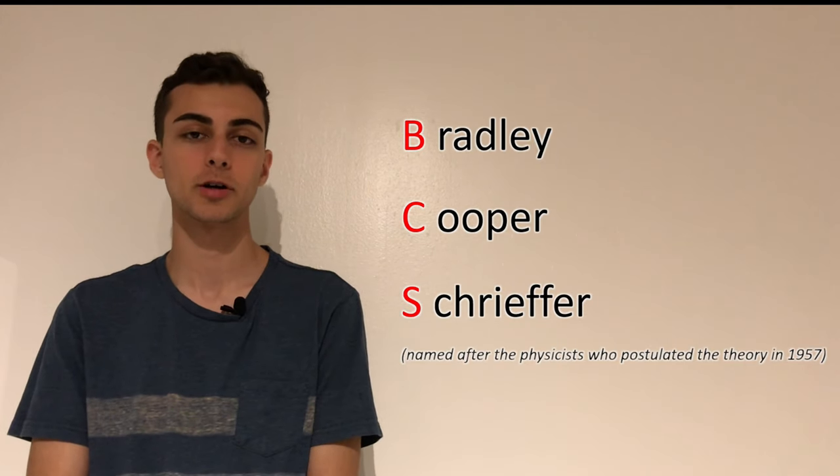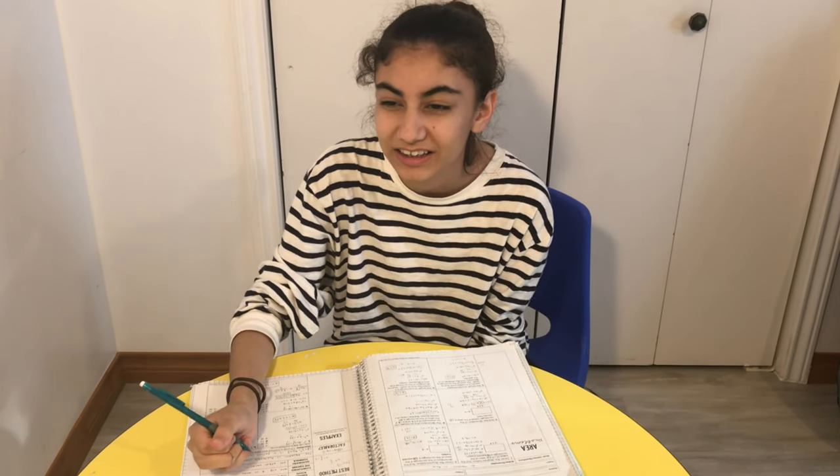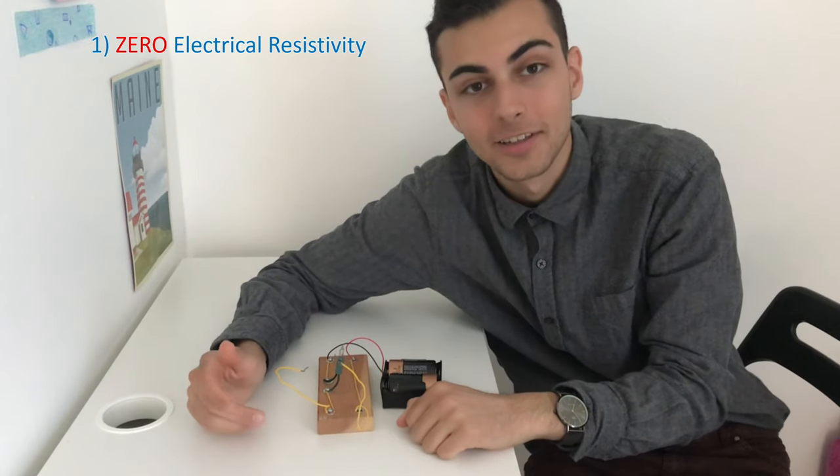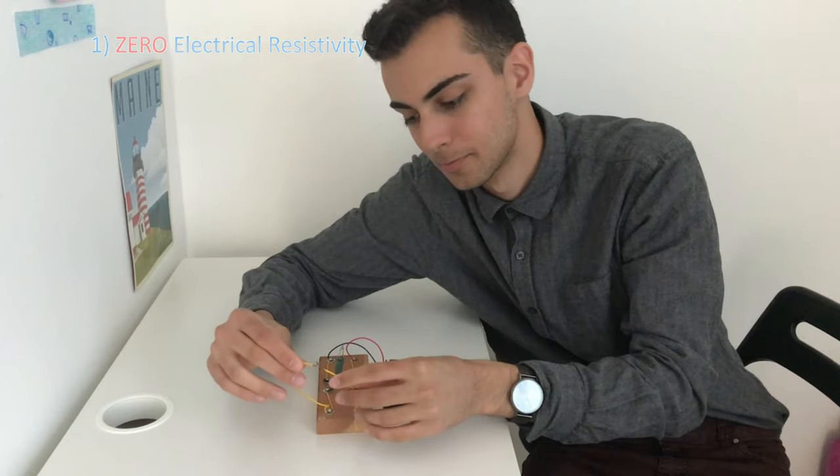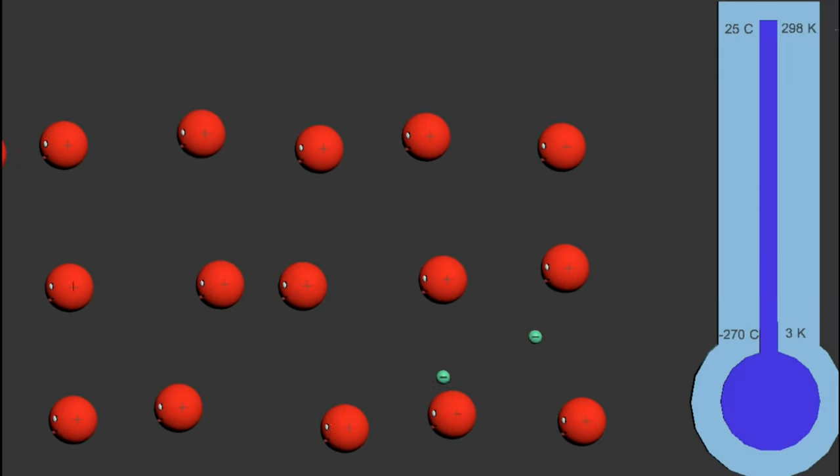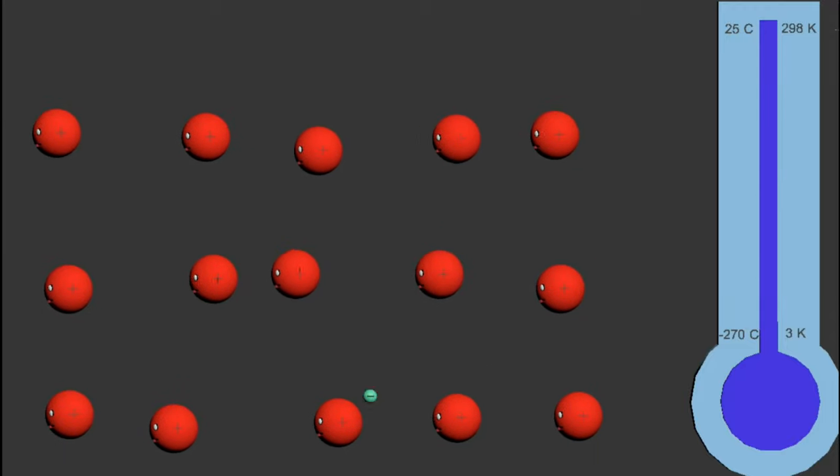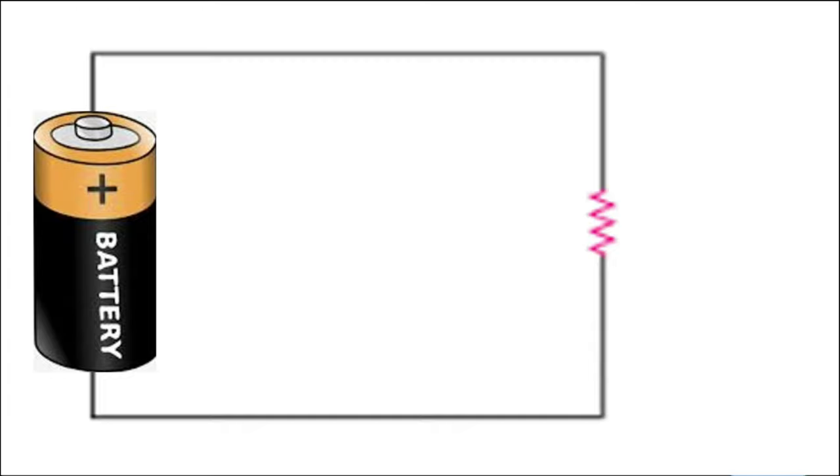Zero electrical resistivity. How is that physically possible? Well, let's first consider a normal conducting material such as this copper wire at room temperature. If we use a battery to induce a current, we can think of the electrons as flowing through a lattice of positive ions which vibrate due to thermal energy, causing the electrons to frequently collide with the ions and with themselves, dissipating energy in the form of heat and light.